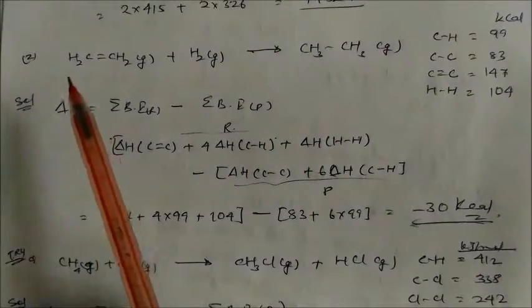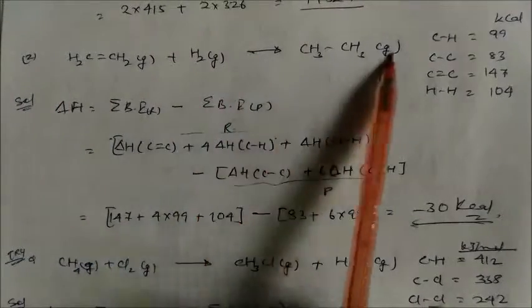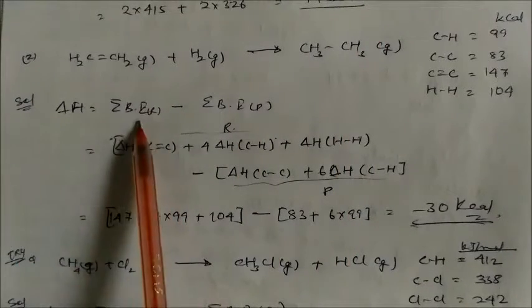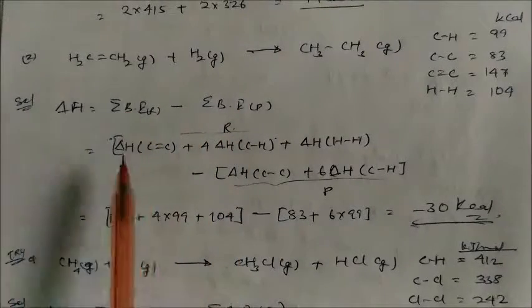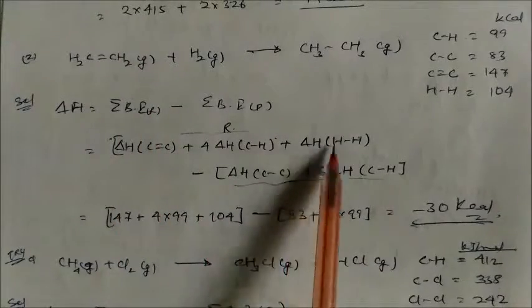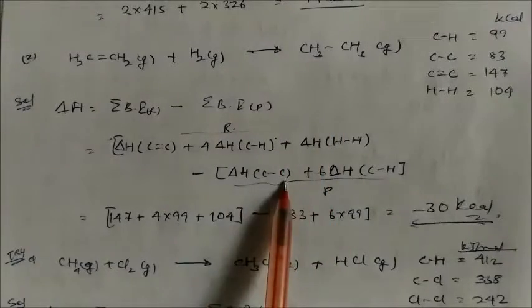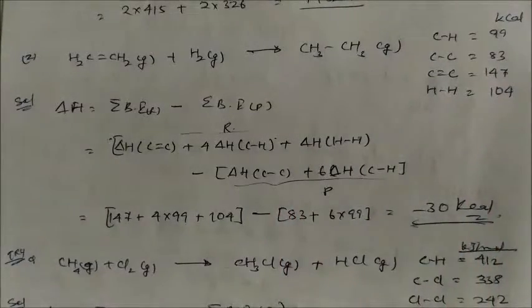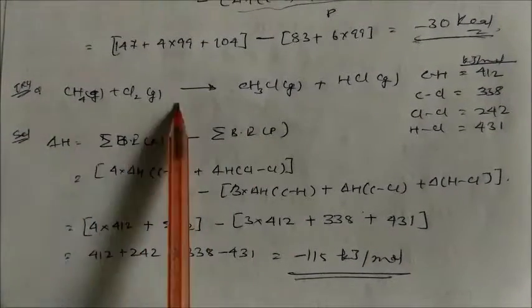For hydrogenation of ethene to ethane: ΔH reaction = bond enthalpies of reactants minus products. Ethene has one C=C double bond and four C–H bonds, plus H–H. Ethane has one C–C bond and six C–H bonds. Substituting values gives ΔH = −30 kcal/mol.